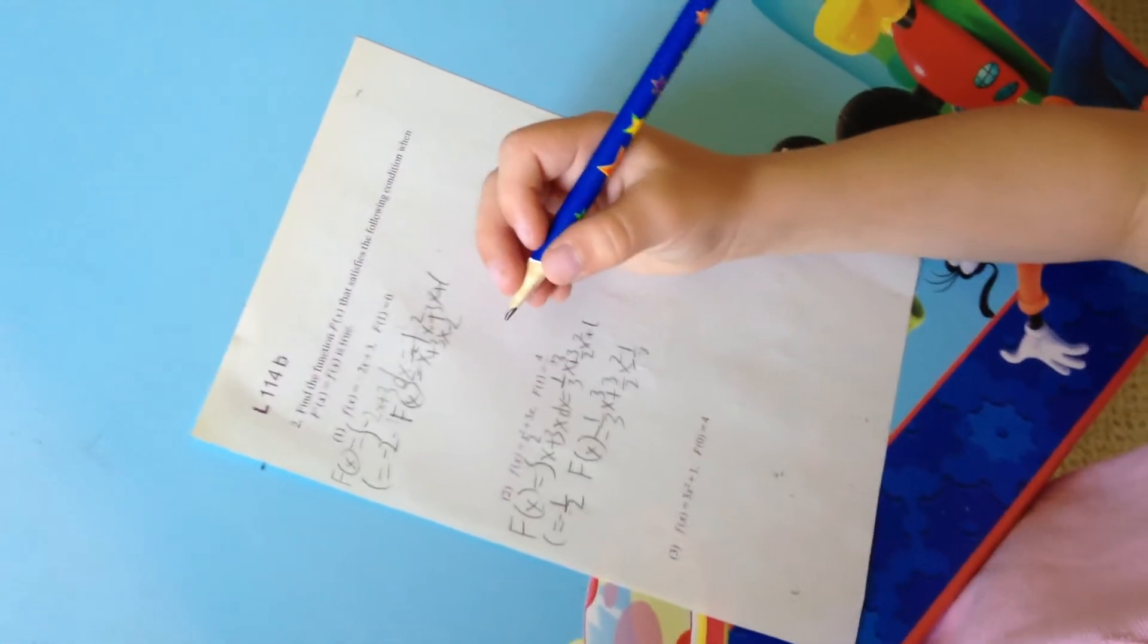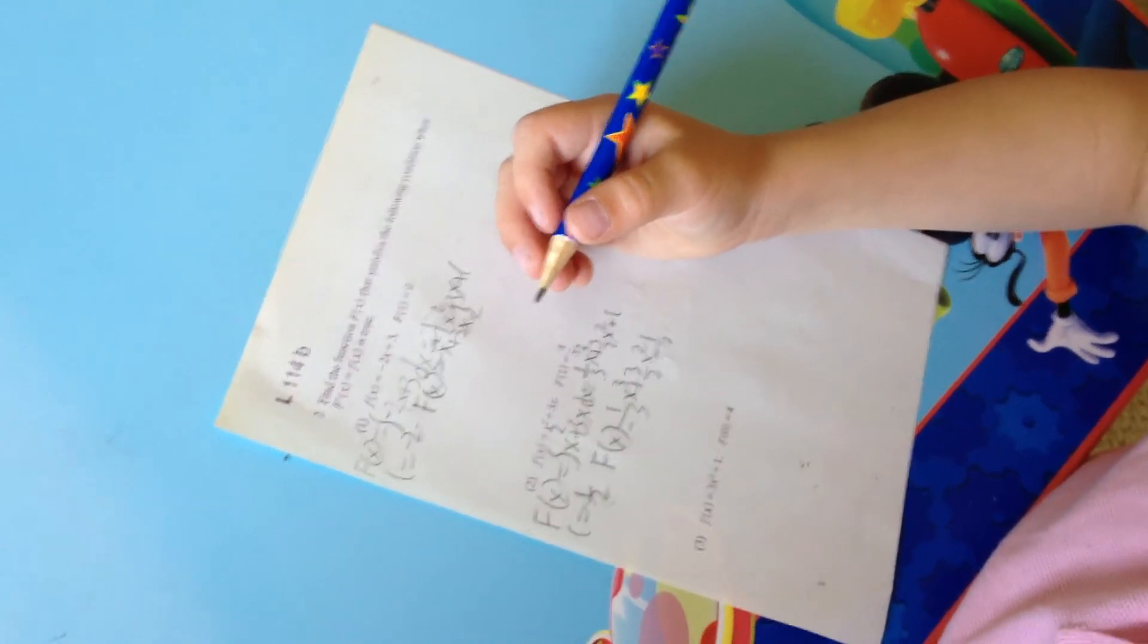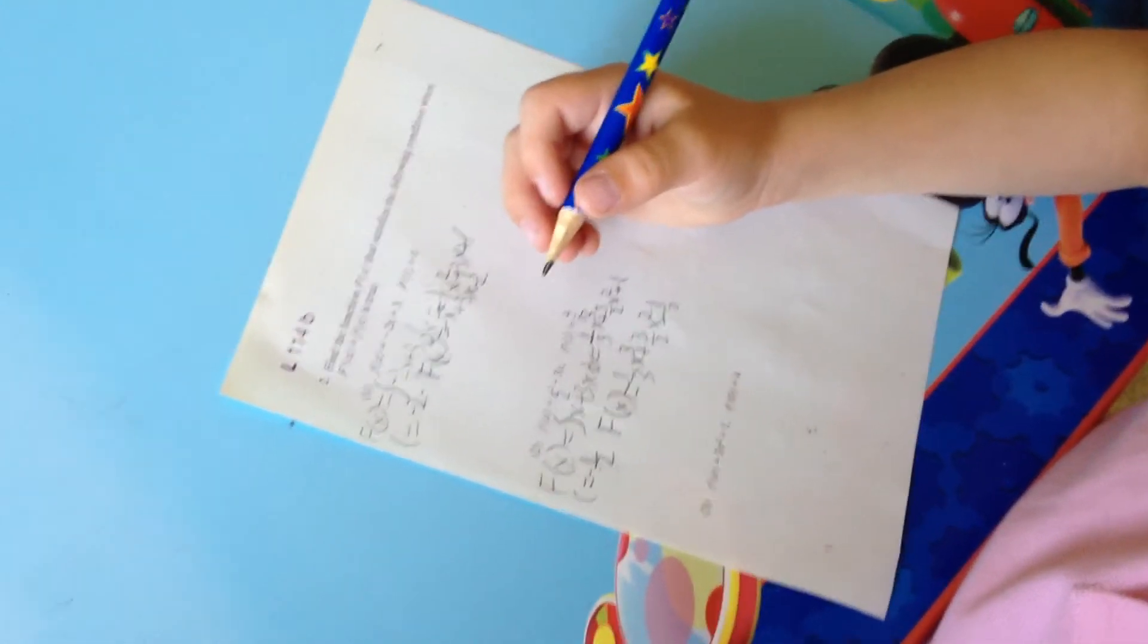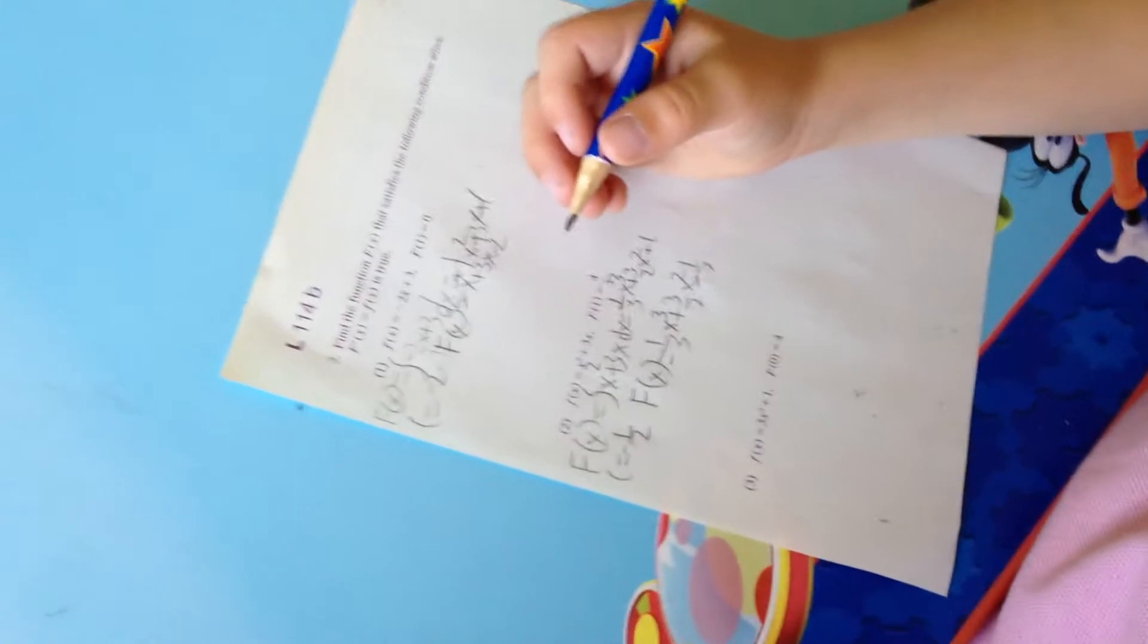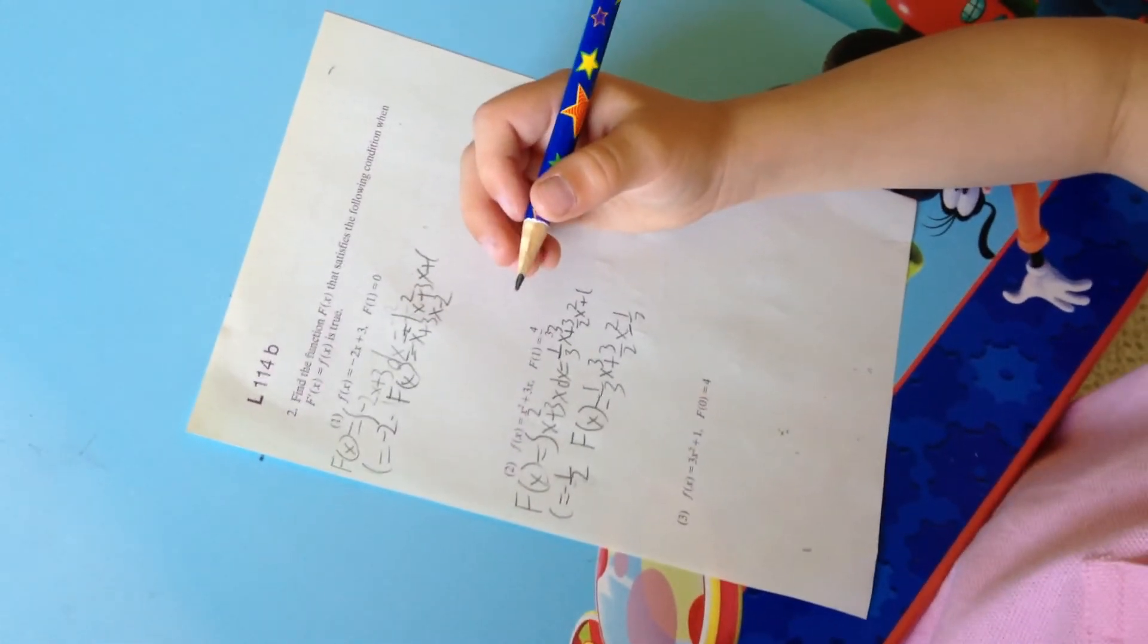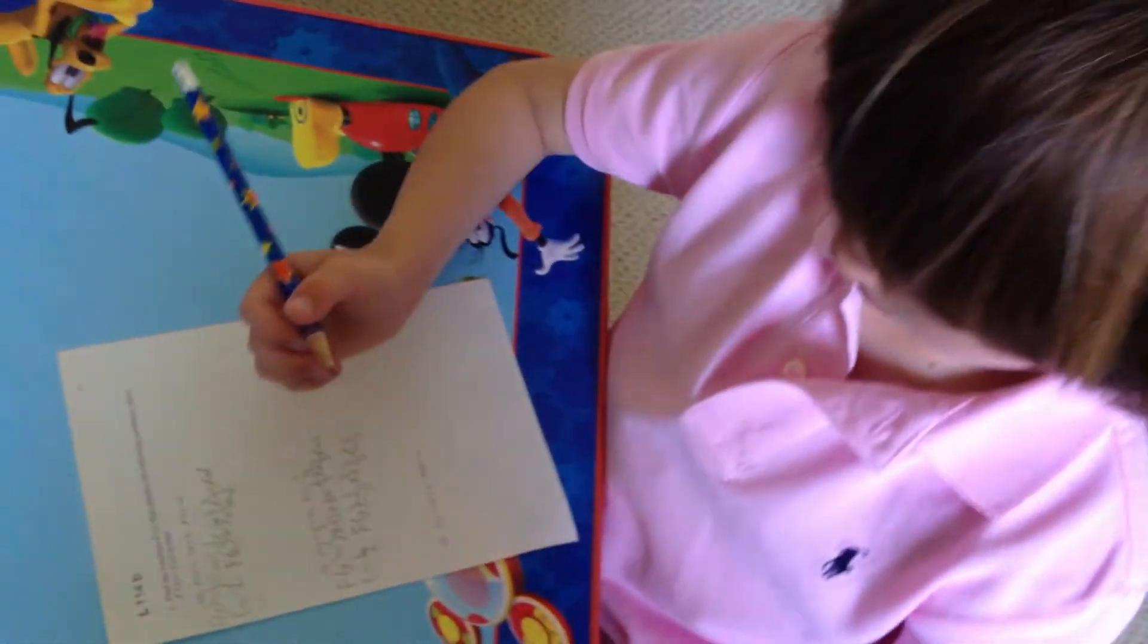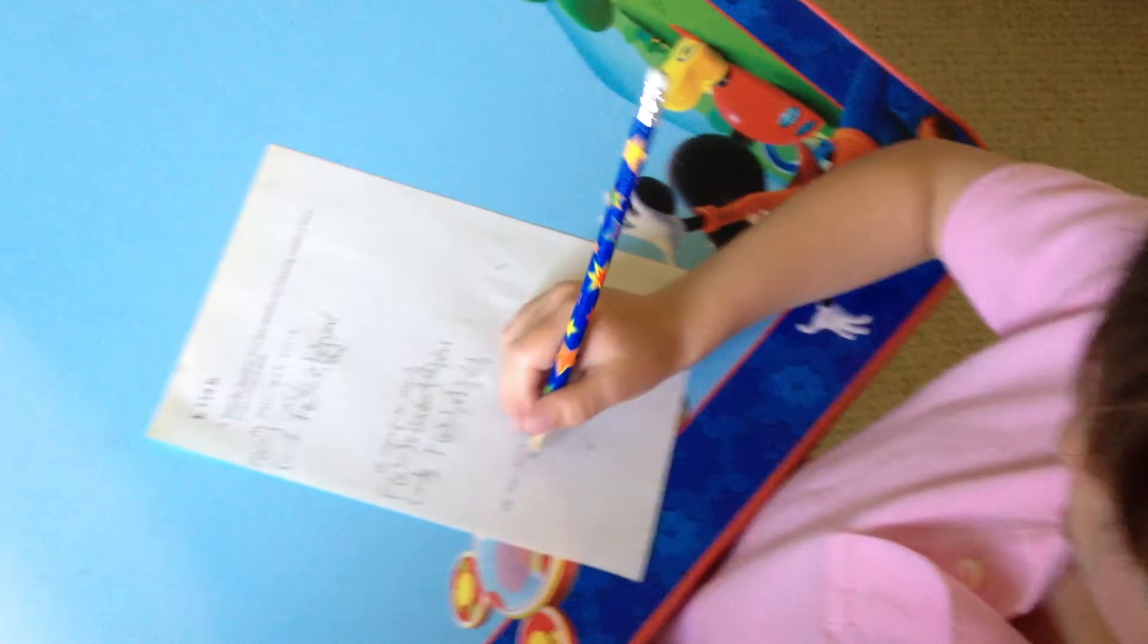So they just made up F of 1 equals 4 over 3? Yeah, when they just... When they figured out what should... What kind of problem should we create? And they figured, ah, let's just try F of X equals X cubed X squared plus 3X and we'll give an example of F of 1 equals 4 over 3. And then you just have to figure out what the original equation must have been.